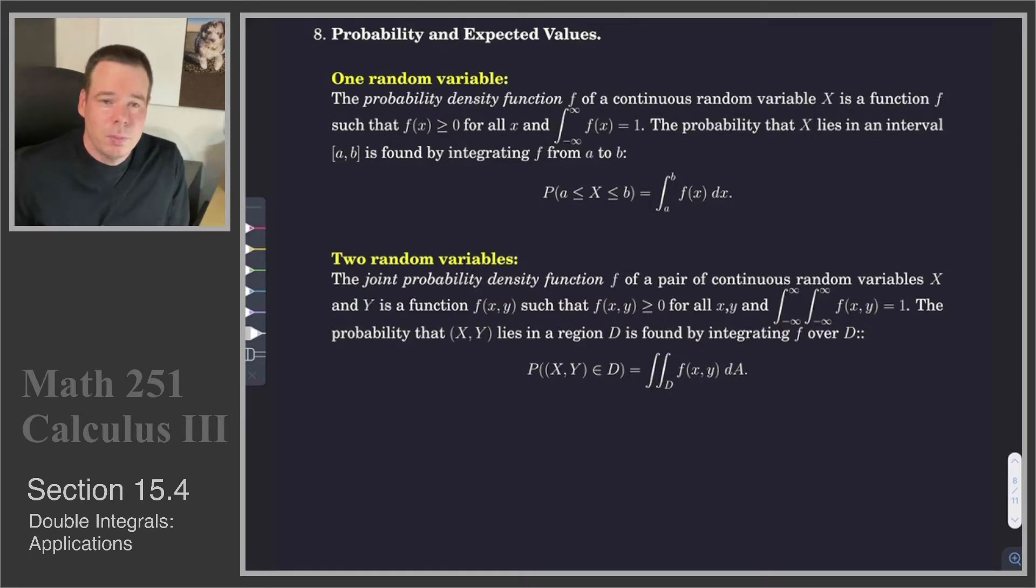Then the question about what is the probability of your random variable taking on some value between a and b could be answered by computing the integral of your probability density function over the interval a, b. So that is the probability that x takes on a value between a and b, given by the integral of a function of a single variable.